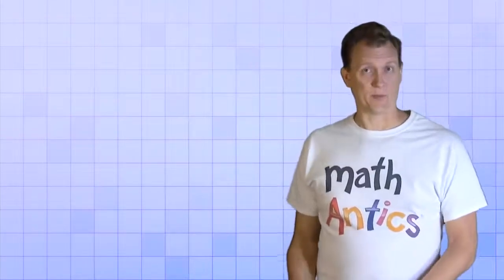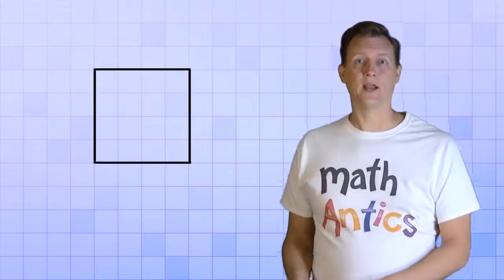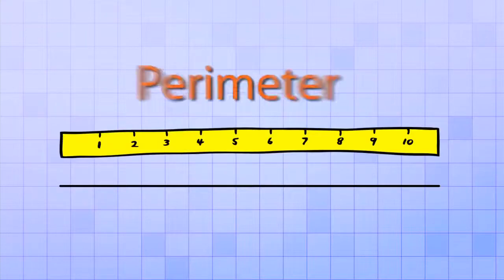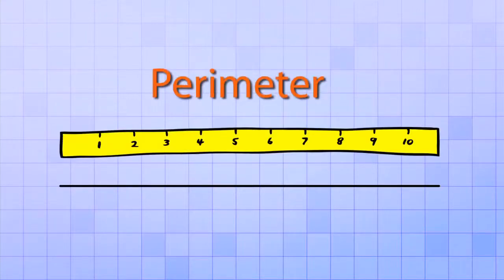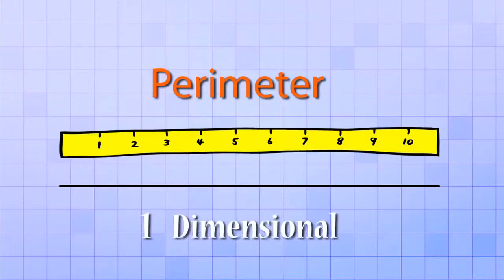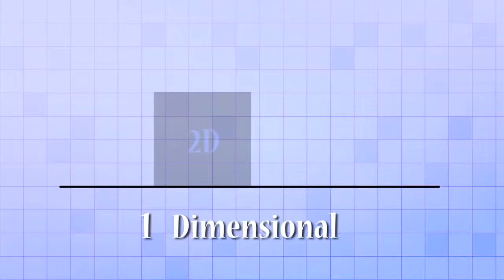Another good way to see what perimeter is, is to imagine that you could take a shape, like this square, and break it at one of its corners. Then you could unfold the shape until it formed a straight line. The length of that line is the perimeter of the shape. Doing this helps you understand why perimeter is a one-dimensional quantity, even though it applies to two-dimensional shapes like this square. It's one-dimensional because it's the distance of the lines that go around the two-dimensional shape.